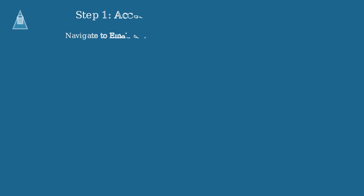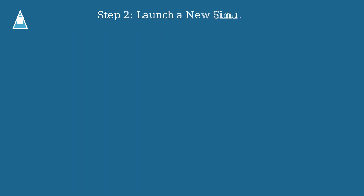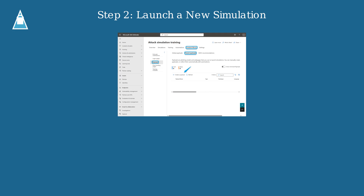To configure an ATT&CK Simulation Training in Microsoft Defender, first access the portal and navigate to Email and Collaboration, then ATT&CK Simulation Training. Once in the ATT&CK Simulation Training section, click on Launch a Simulation to start the configuration wizard.